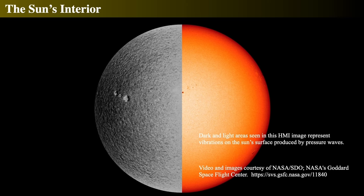Helioseismology allows us to understand the interior of the Sun — not only the outer layers but to some extent down to the core. The core is measured in a slightly different way; nobody has ever been to the Sun or can take a physical sample. All we get is light. So we have to see the surface patterns, understand the wave patterns bouncing around, and from that learn about the Sun's interior.